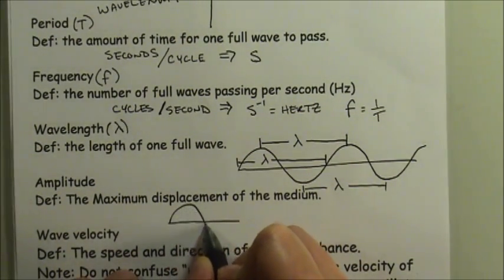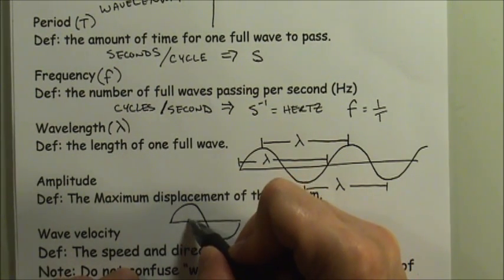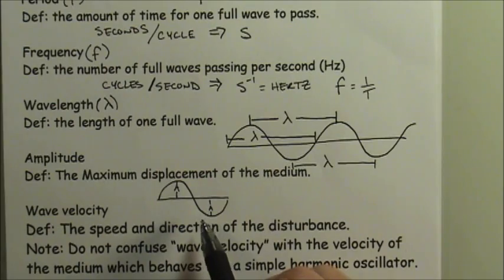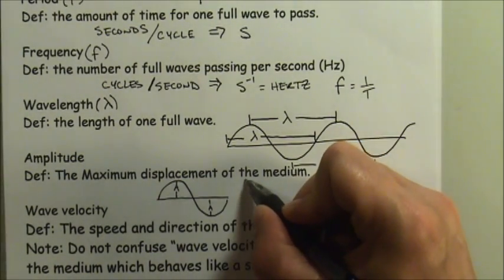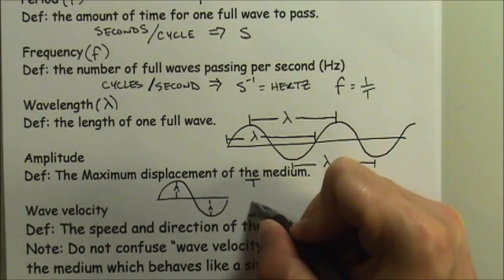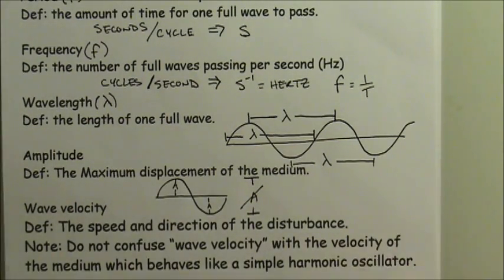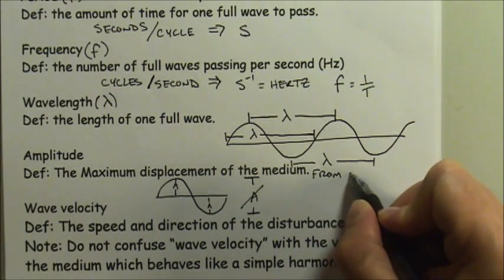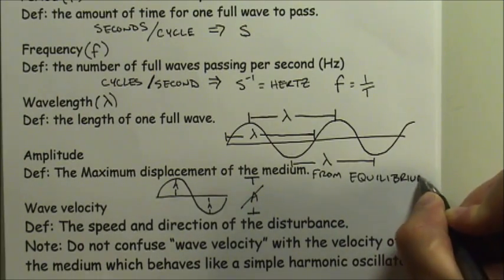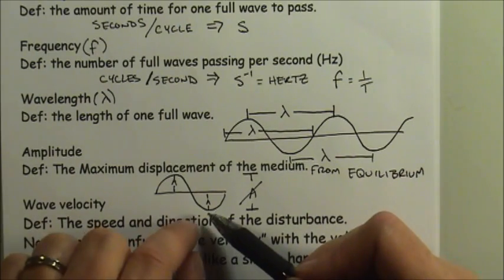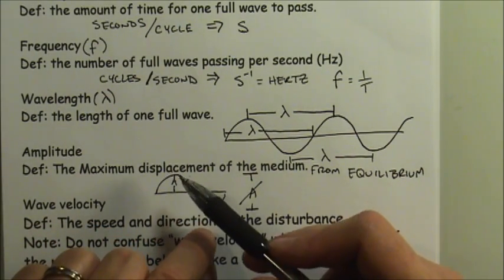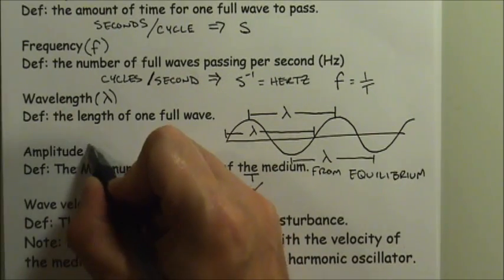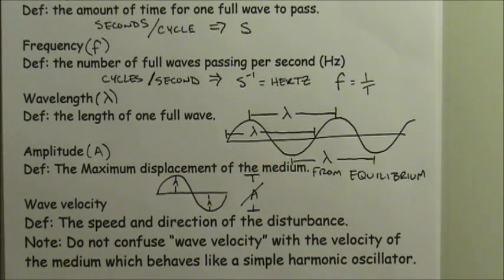Amplitude can be measured at a crest or a trough. One critical point: the distance from the trough to the crest is not the amplitude - that is twice the amplitude. The amplitude is the maximum displacement of the medium from the equilibrium position, not from maximum negative to maximum positive, but from equilibrium to the maximum displacement. Amplitude is symbolized by capital A.